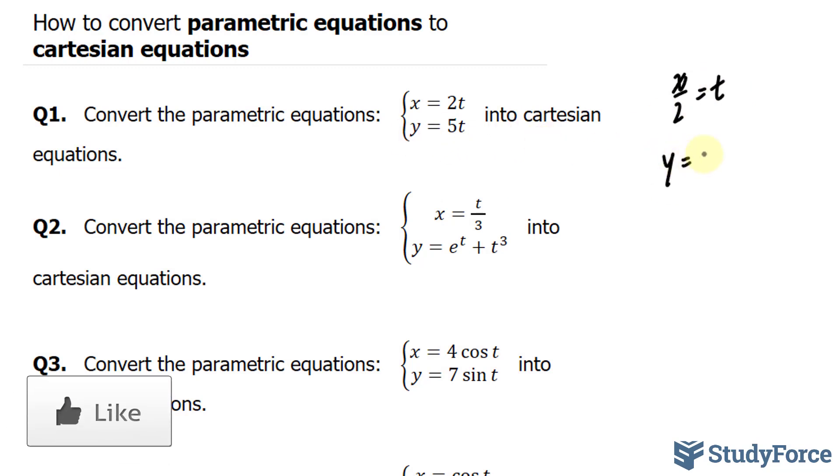And I'll substitute what t is equal to into the other equation, where I have y is equal to 5 times x over 2. That right there represents the Cartesian equation in place of these two parametric equations.